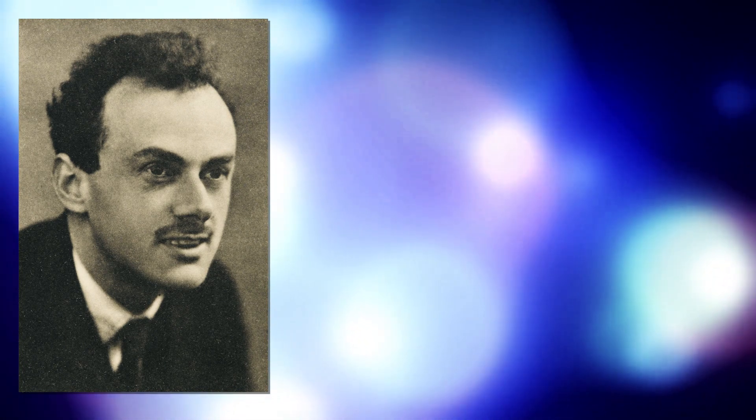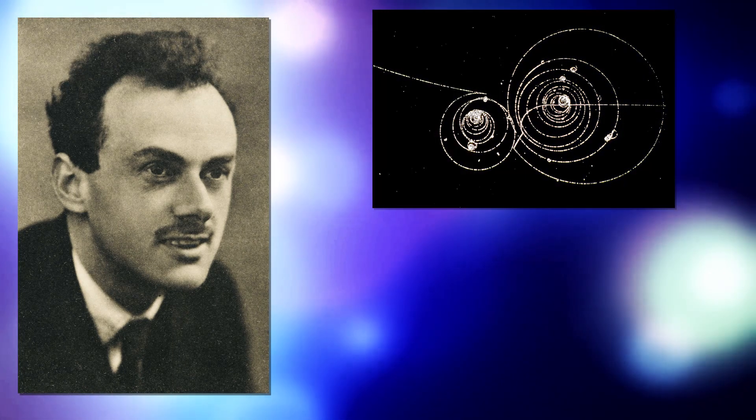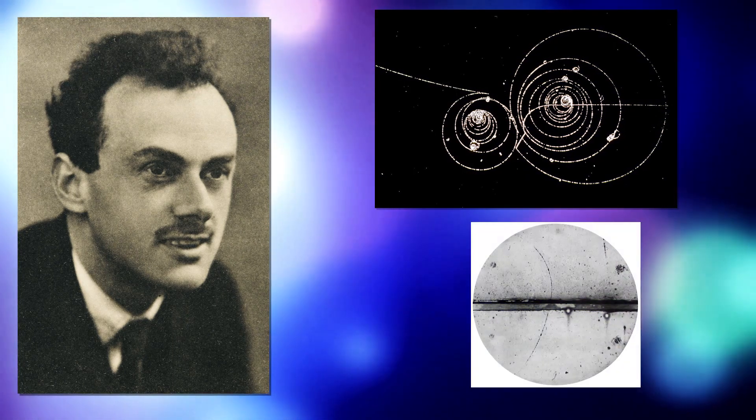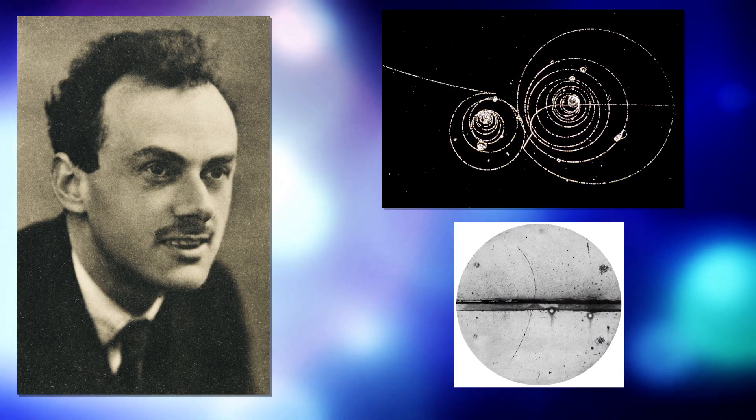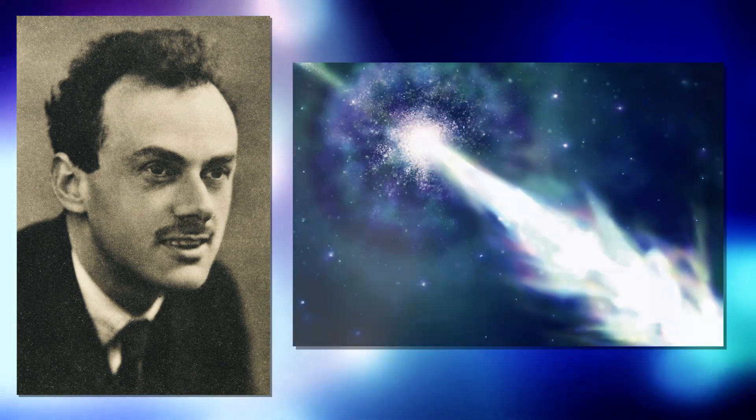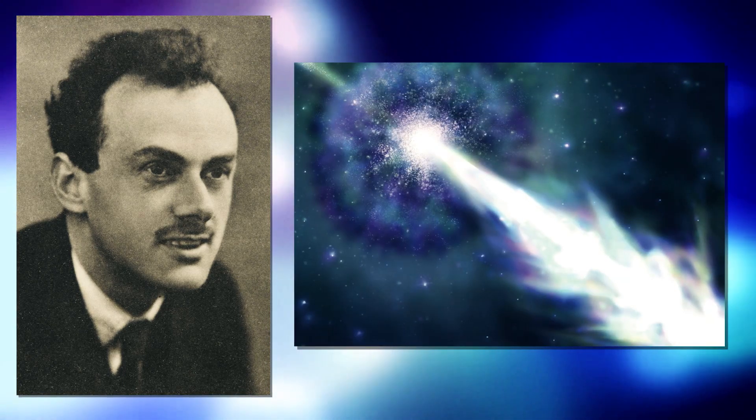In 1928, Paul Dirac built a theory of the electron and its interactions with photons that is consistent with special relativity. However, his equation also predicted the existence of antimatter, positrons, and the possibility that an electron and a positron could mutually annihilate in a burst of energy.